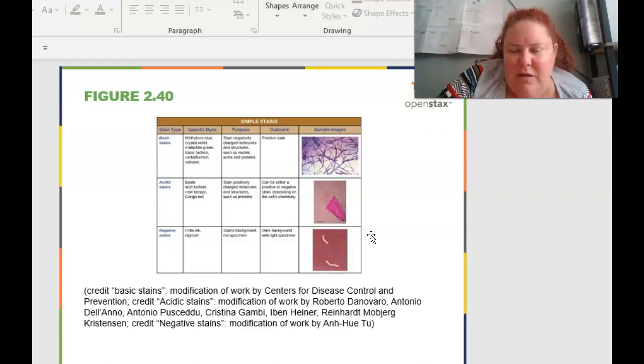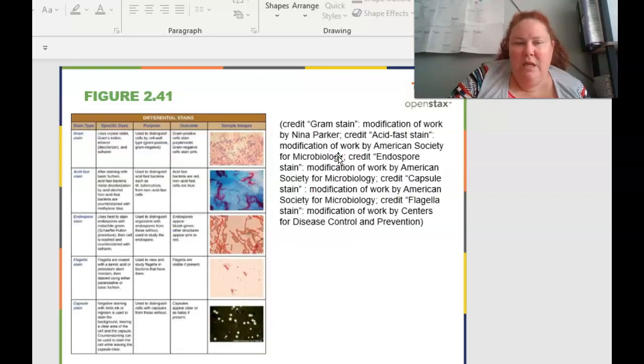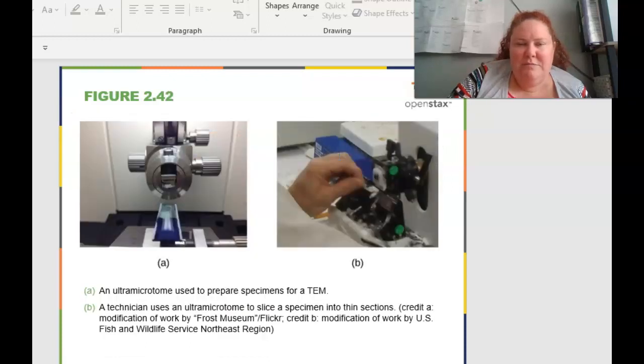So here is another different comparison thing. So we have basic stains, acidic stains, negative stains, the specific dyes that are used, the purpose of them, outcome and sample images. These guys are going to be fantastic for you guys to study and have around when you do your lab practicals. So I really suggest getting familiar with these and understanding them. Same type of things here with gram stain, acid fast, endospore stains, flagellar stains, and capsules. Make sure that you are very familiar with these.